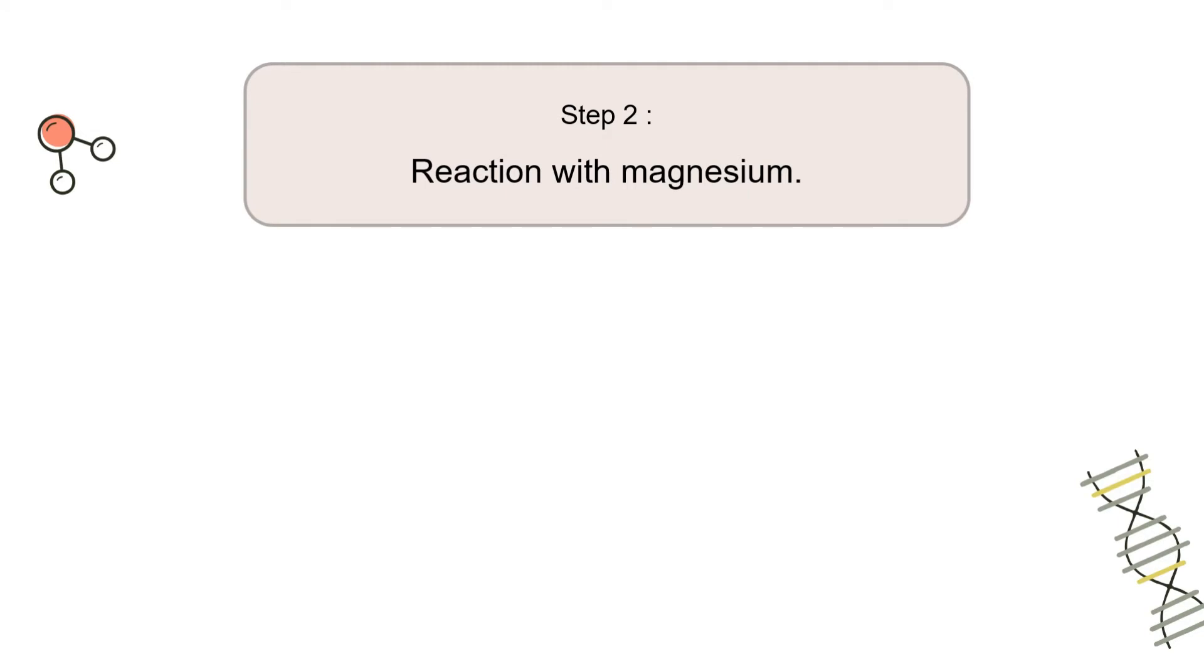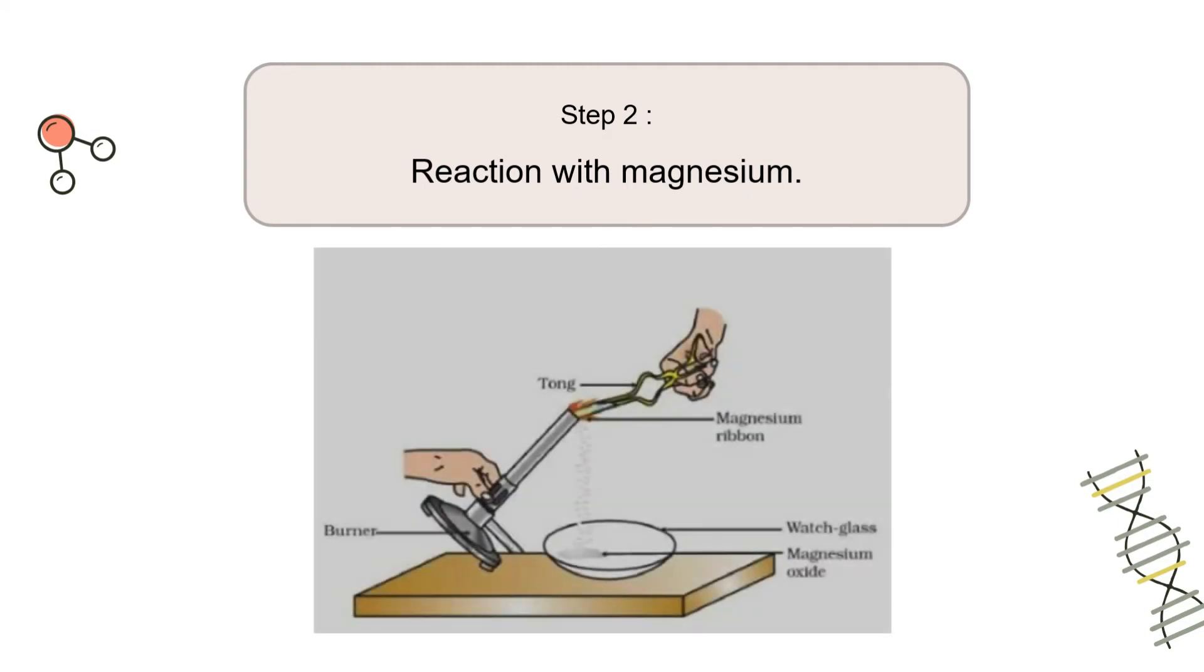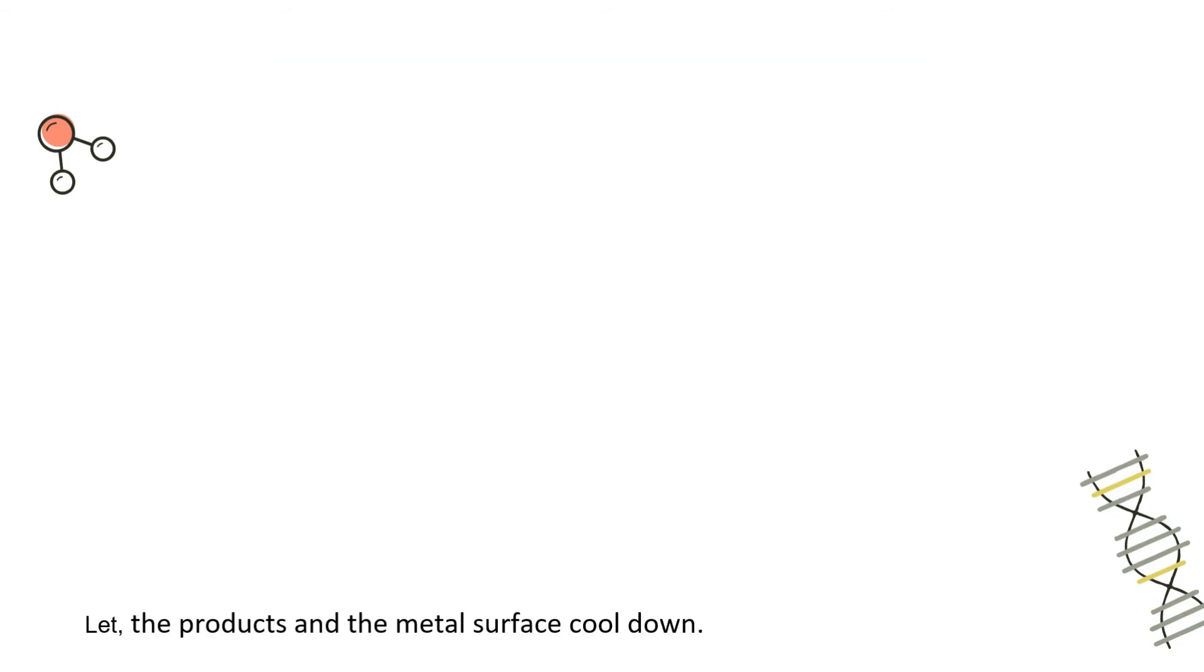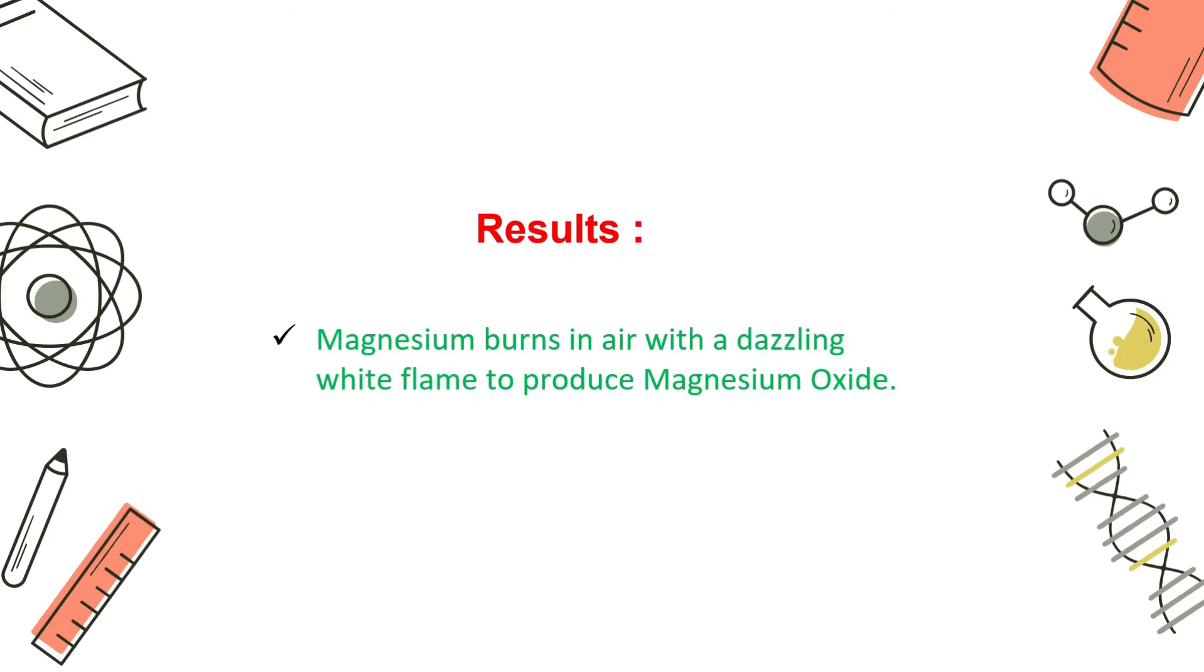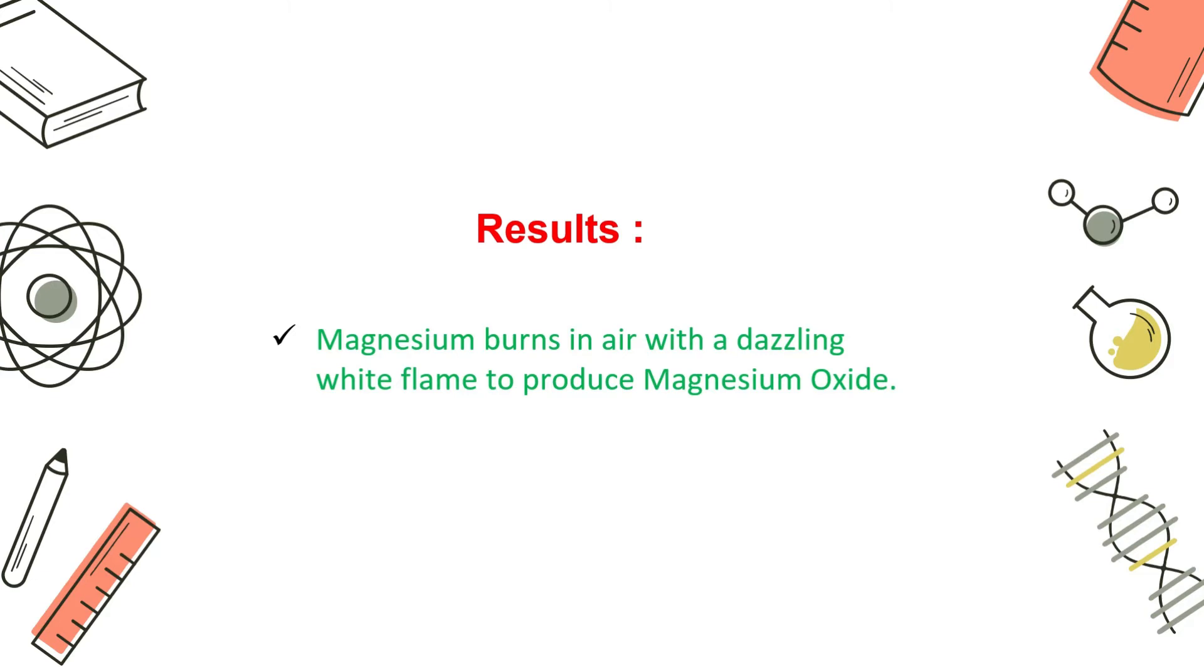Now second step would be reaction with magnesium. We will burn magnesium with the help of burner and let's see if there is any product or not. Okay, the product is formed. In case of magnesium there is a product, but it is not compulsory that in other 6 metals there will be any product formed. Now let the products and the metal surface cool down. What will be the result? The result would be magnesium burns in air with a dazzling white flame to produce magnesium oxide.